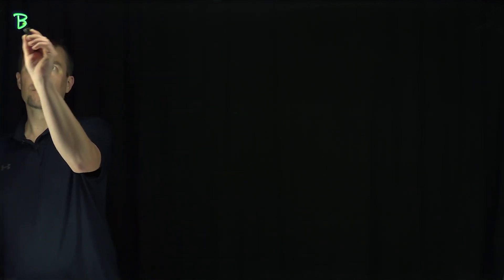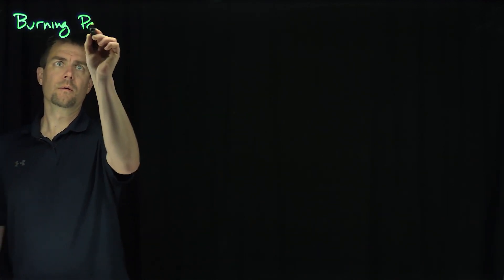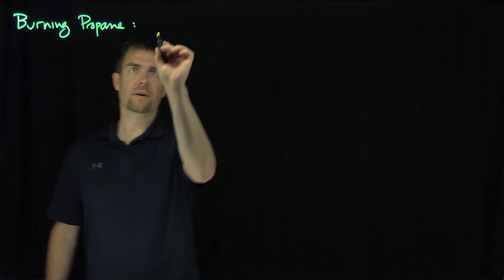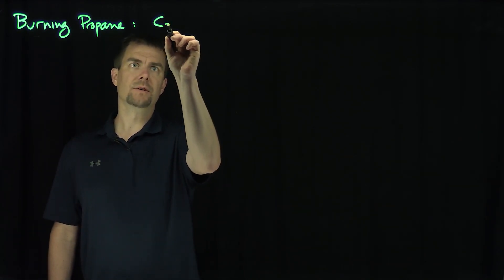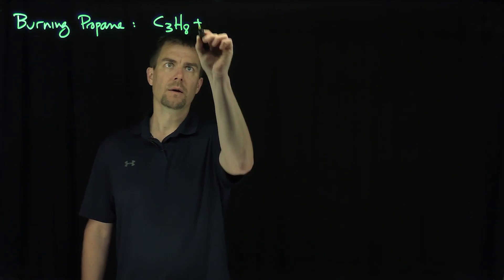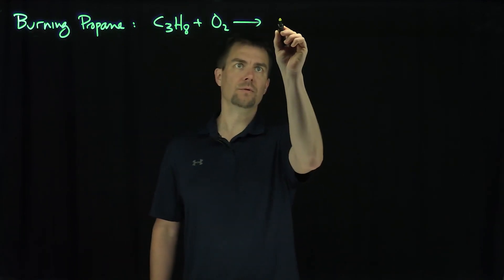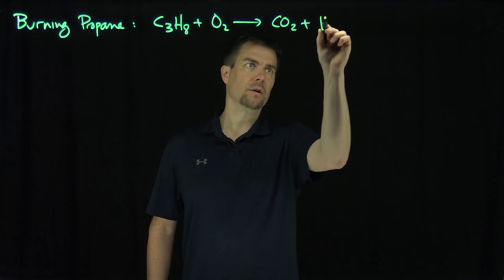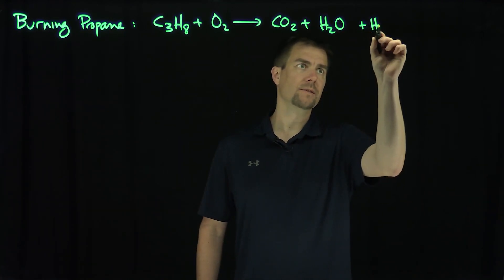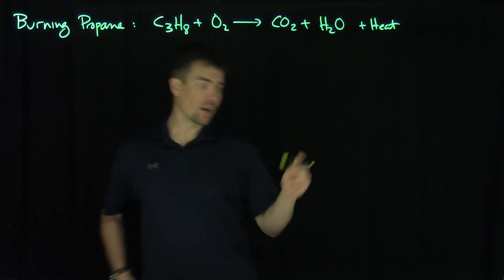This is burning propane. The following chemical reaction is unbalanced: C3H8, propane, plus O2, oxygen, goes into CO2, carbon dioxide, and water, and of course heat. It's an exothermic reaction, and this equation is unbalanced.